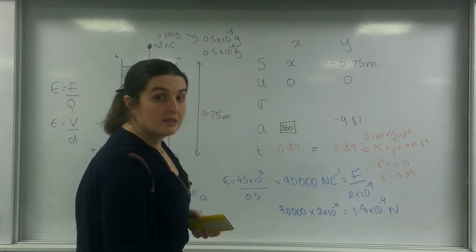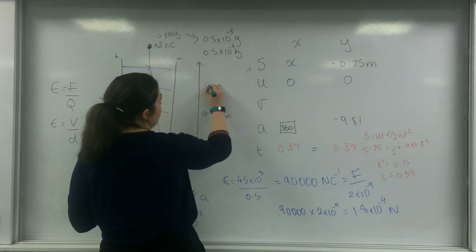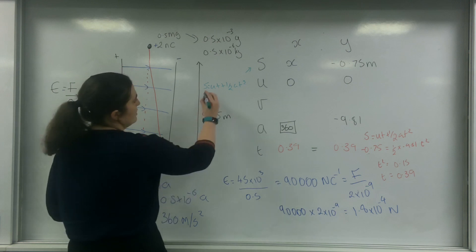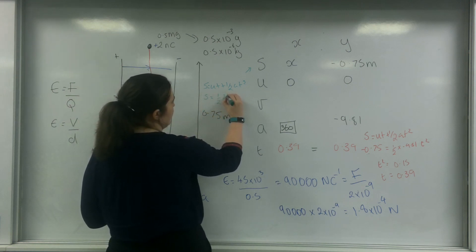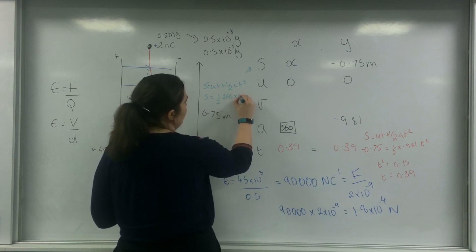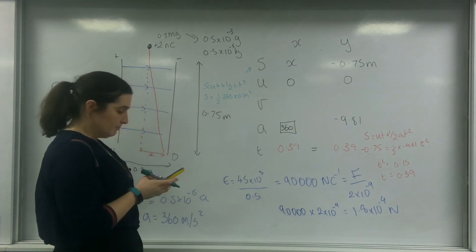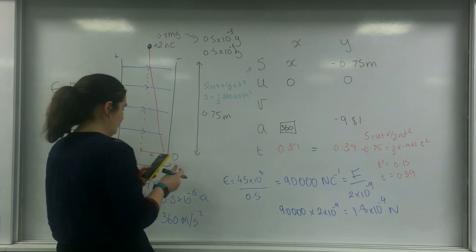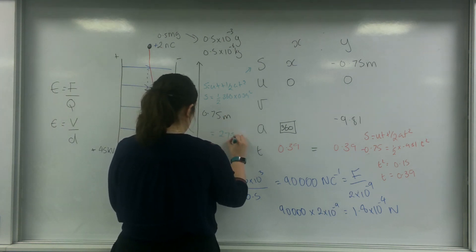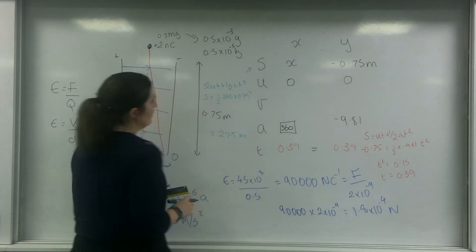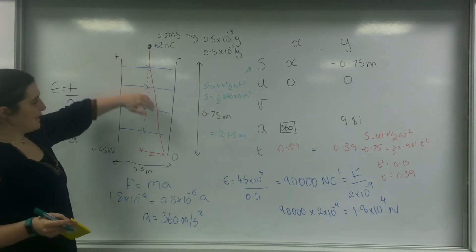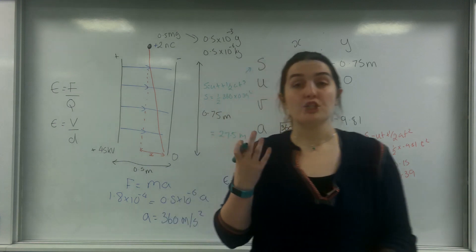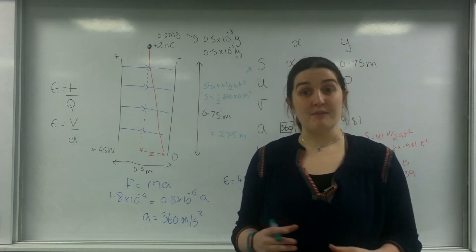To work out displacement S in the x direction, I use S equals ut plus half at squared. U is 0, so S equals half times 360 times 0.39 squared. This gives about 27.5 metres in the time it takes to drop — and this is because it's such a small mass, its acceleration is quite big.